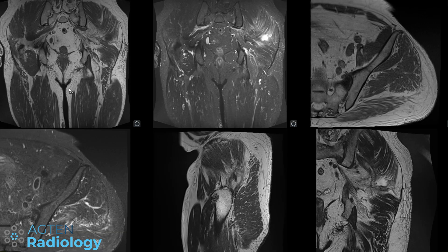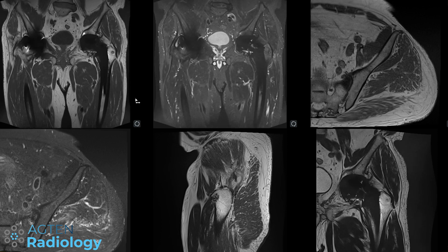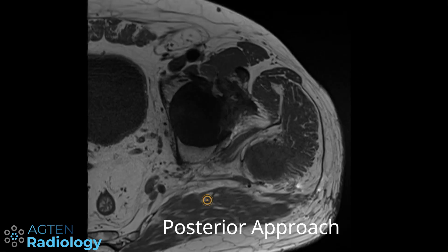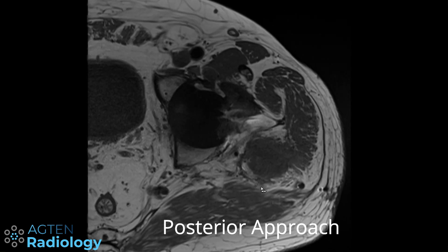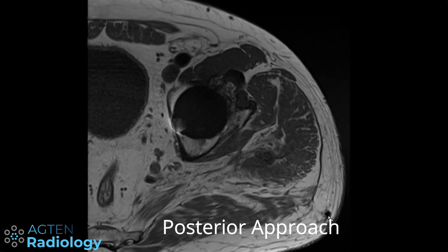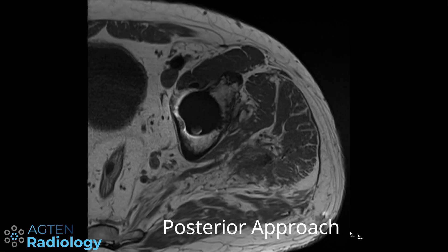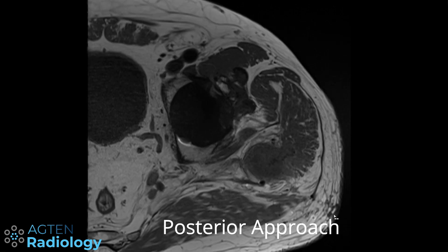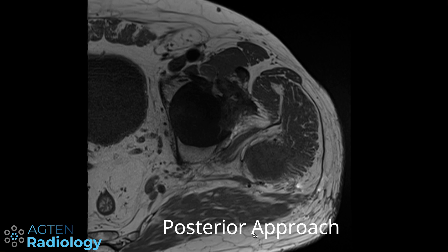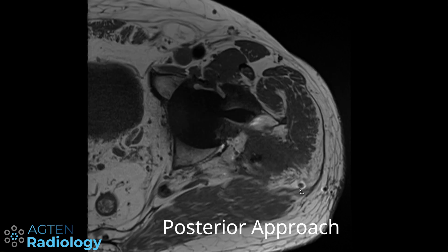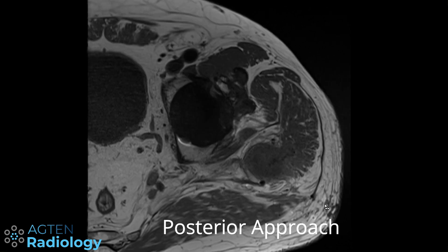This is an example of a patient after a posterior approach. Again, looking at the axials and scrolling through a little bit faster than usual, you can see the susceptibility artifacts here from a posterolateral or posterior angle, running between the gluteus maximus muscle and the gluteus medius muscle.